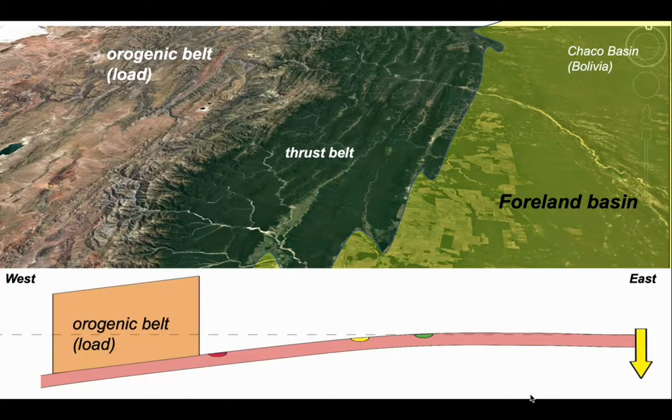Separating the orogenic belt from the foreland basin is a thrust belt where some of the older parts of the foreland basin have been caught up in the advancing Andean orogeny. So this is the basic setup. Our orogenic belt load, the Andes, flexing the South American plate, creating a foreland basin, the Chaco basin.